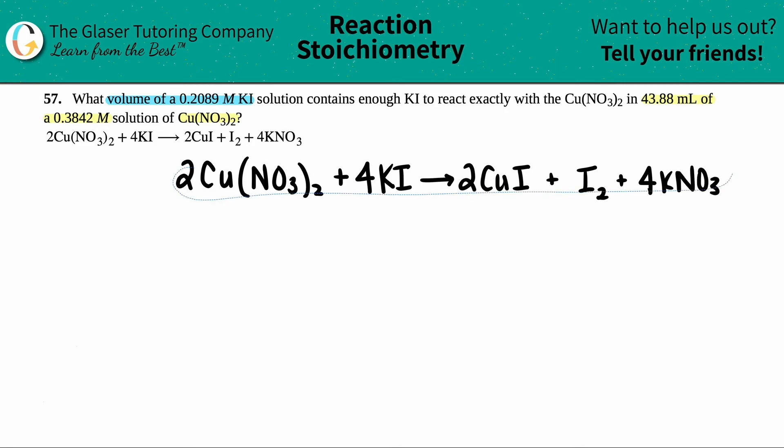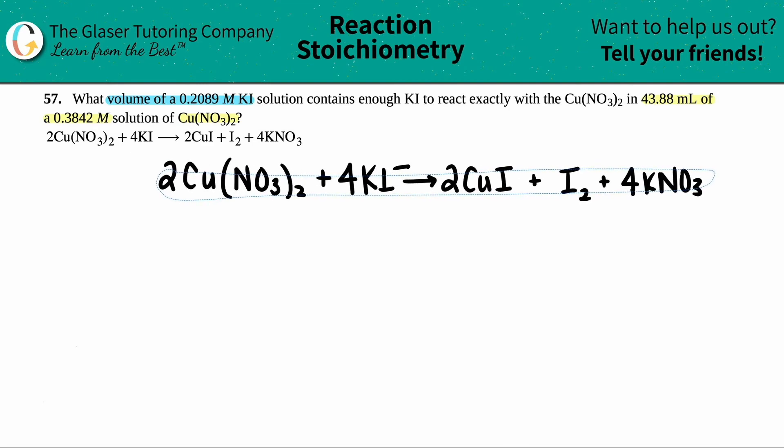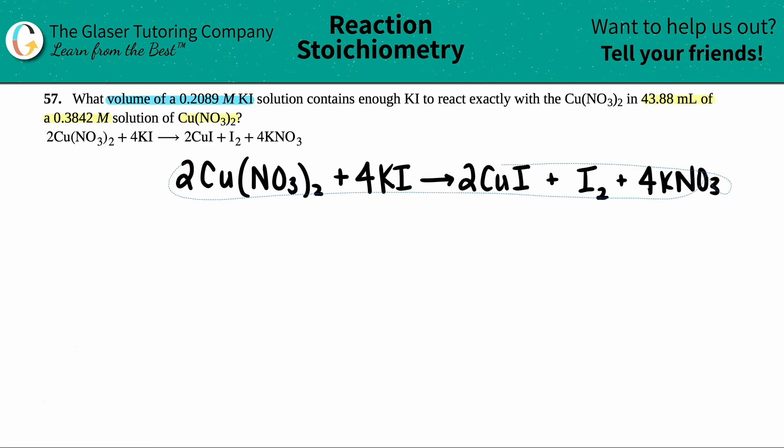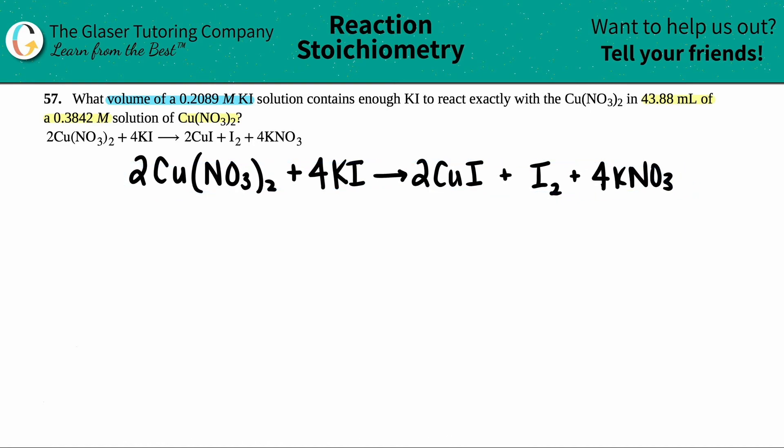Right off the bat, I see that there are coefficients in the front of this equation - there's a two, a four, a two, and a four. Remember, if there's no number in front, that means you have one of these. If I see coefficients, chances are this equation is going to be balanced. Since I see coefficients, this is going to be ready balanced for you, so you don't have to do anything there.